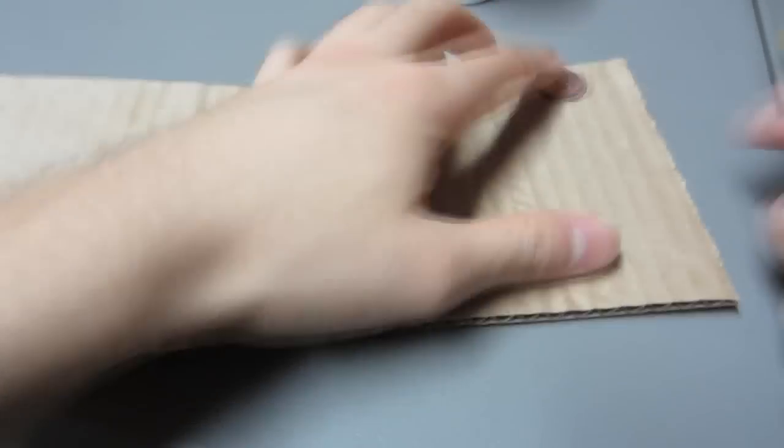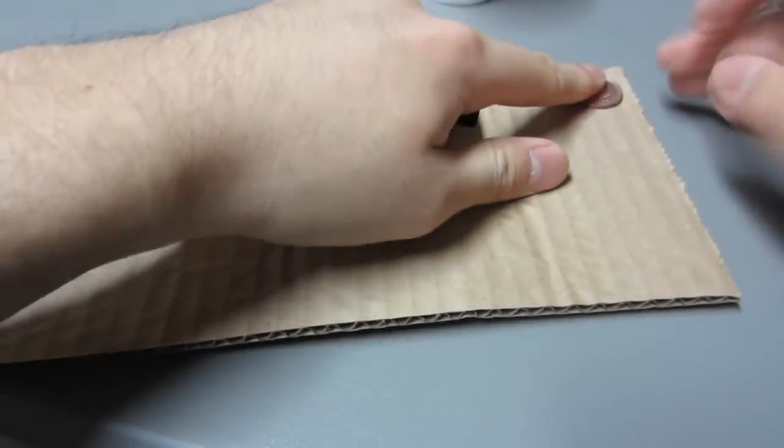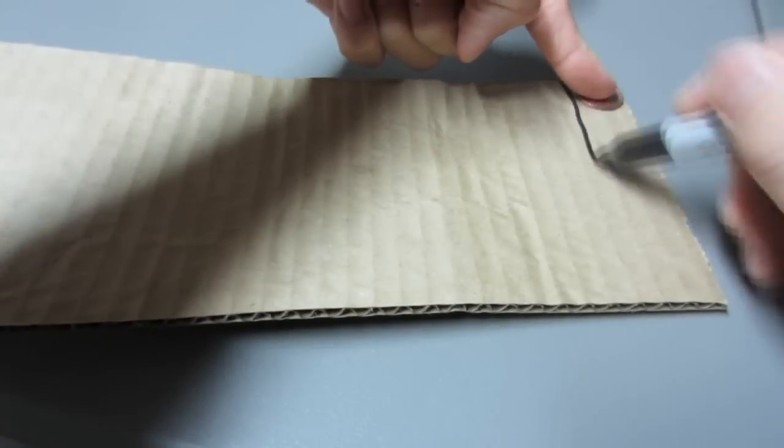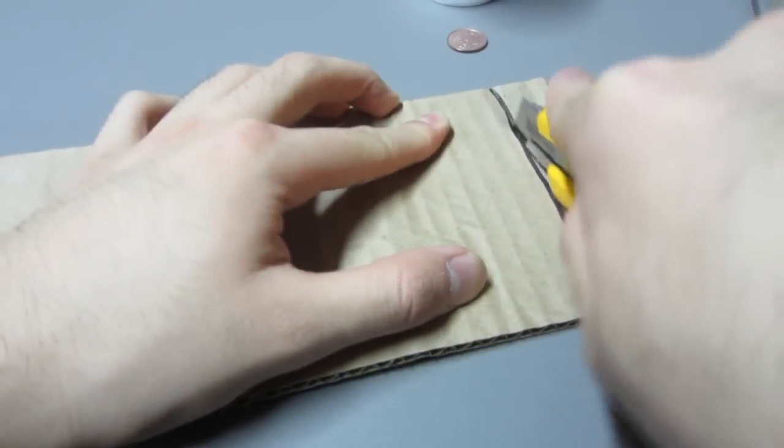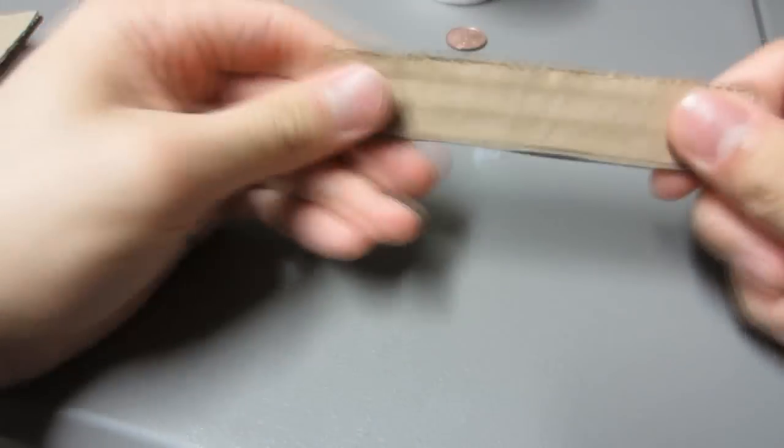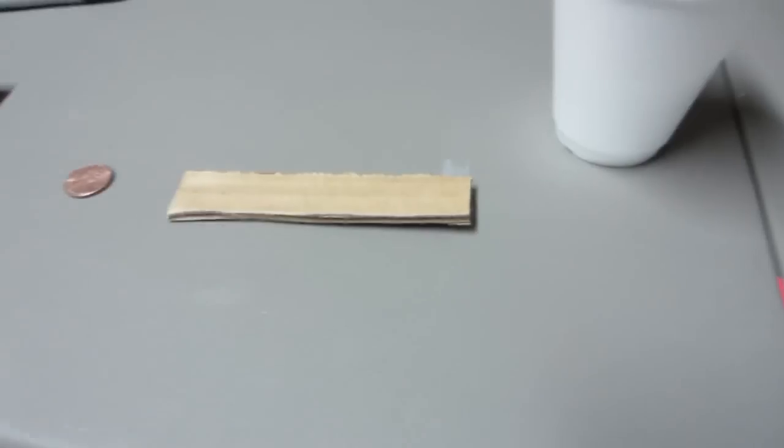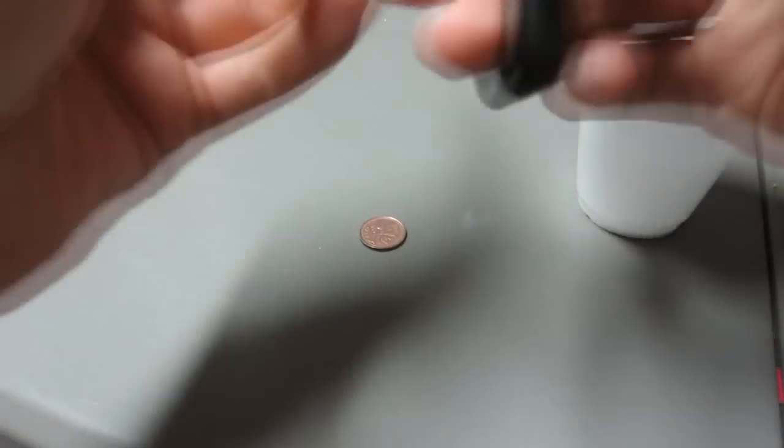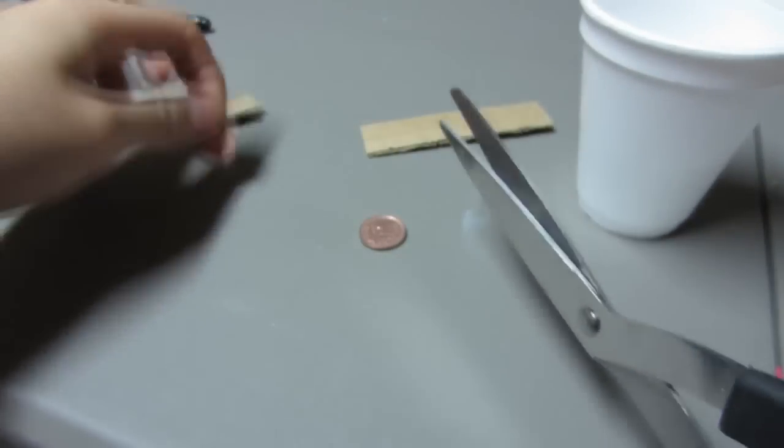So what we want to do is take a strip of cardboard with a width that's just a bit more than the pennies. This will act as our salt bridge if you guys took chemistry. I just took a penny and drew a line right down the cardboard and sliced away for the strip. After that I took my scissors and cut pieces of cardboard that fit onto the penny shape.